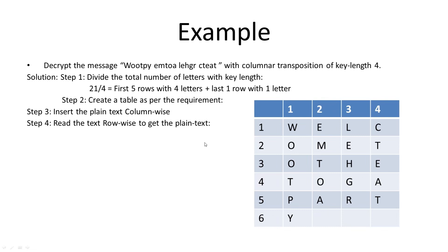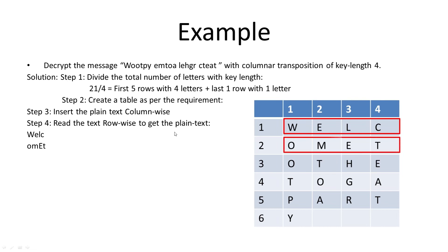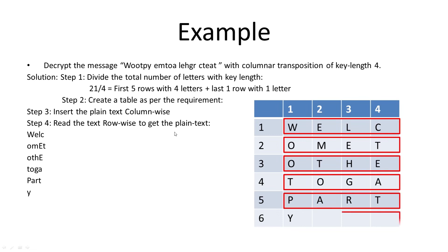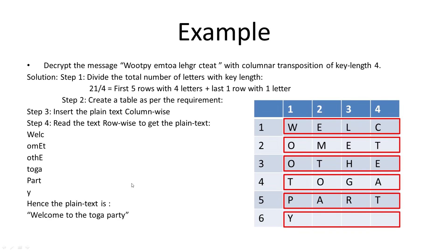Now to get the plaintext, we read the text row-wise. The first row gives W E L C, the next row O M E T, then O T H E, then T O G A, then T A R T, and finally Y. Writing all these letters in one line gives us 'welcome to the toga party.' That is the decryption part.